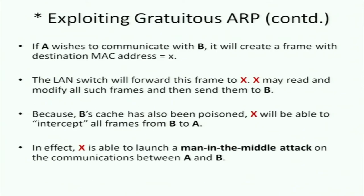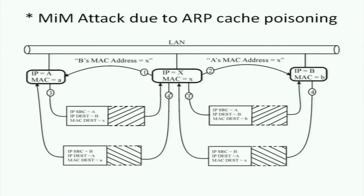The best way to understand the attack is through a picture. I've tagged the messages with numbers. The attacker is X; the two victims are A and B. In message 1, the attacker tells A that B's MAC address is x (X's MAC address). In message 2, the attacker tells B that A's MAC address is x. Then in message 3, A wants to communicate with B. A trusts X's update and sends a packet with source address A, destination address B, but with MAC address x. The Ethernet switch delivers it to X.